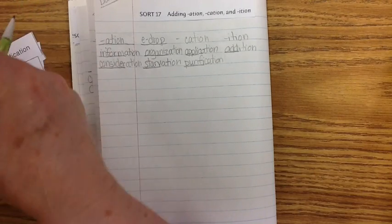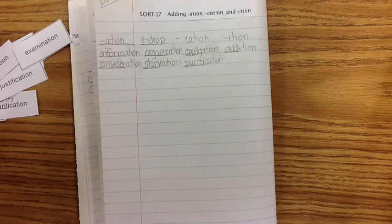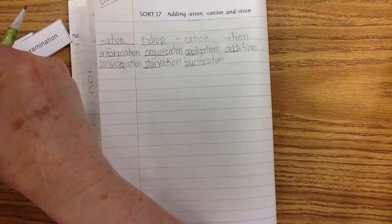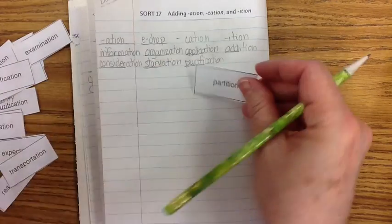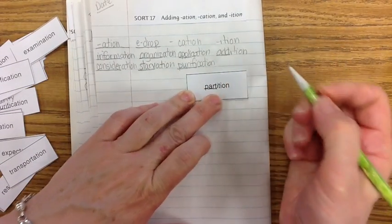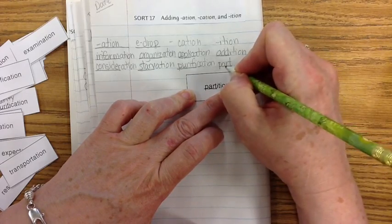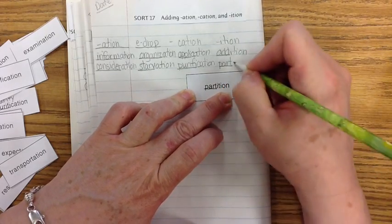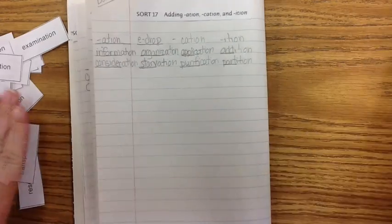And then our last one. Let's see if we can find a word in that one. Here we go. Partition. So we just have part. So part, P-A-R-T, is your base word. And then you have I-T-I-O-N. Partition.